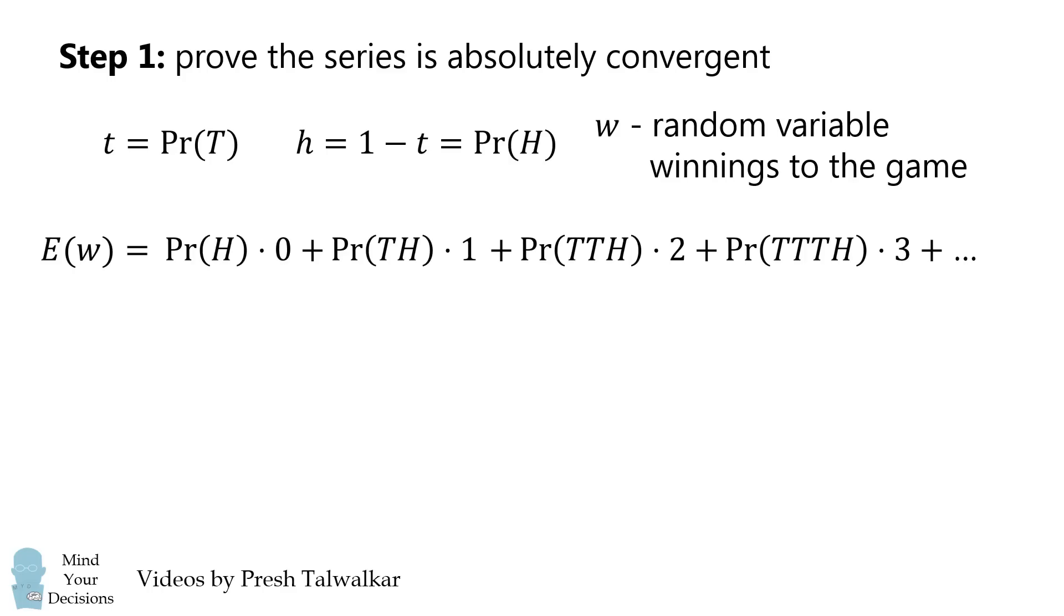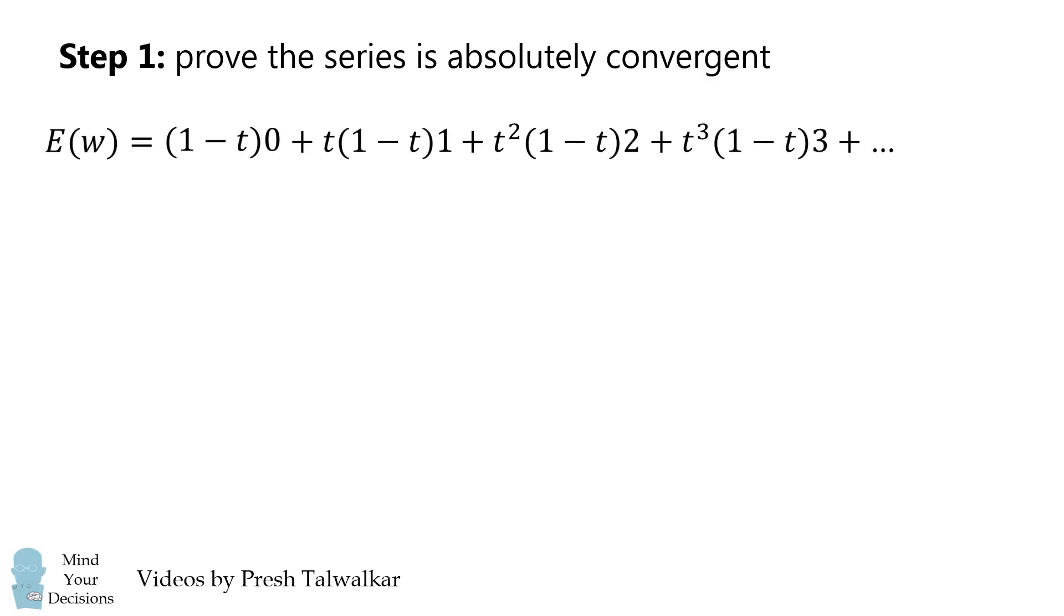So how do we calculate this infinite series? We'll first substitute in the probabilities of heads and tails. We get the following infinite sum. Now, we're going to prove that this is absolutely convergent. The general term of this series is T^K multiplied by the quantity (1-T), multiplied by K, starting at K equals 0.